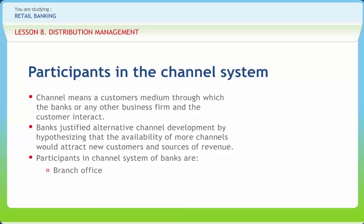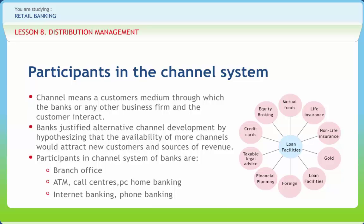The branch office — the traditional brick-and-mortar channel — was the first channel offered by banks, and many times the impressively designed building is confused with the bank institution's image. The ATM was one of the first remote channels to bring customers out of branch offices, offering beyond-branch convenient operations. The call center was also one of the first remote channels. PC home banking was the precursor of internet banking, and internet banking is the most stylish adoption in recent channel management. Web phone or phone banking has been increasing its penetration with the high adoption of wireless phones.